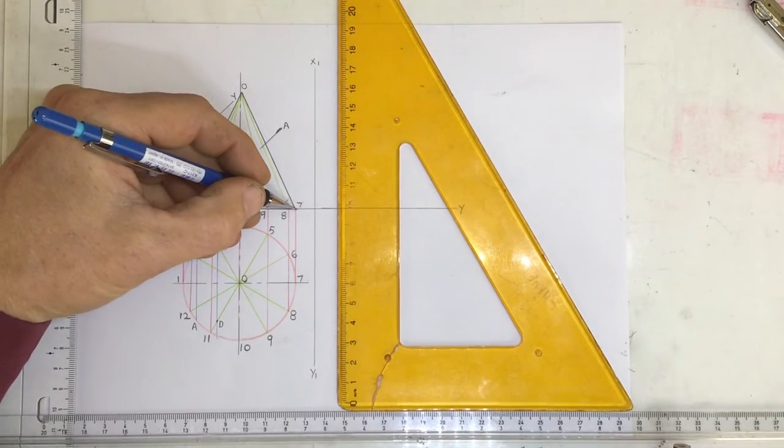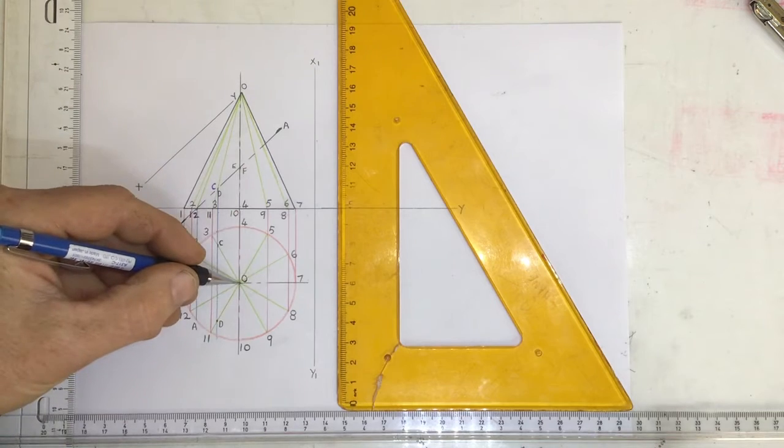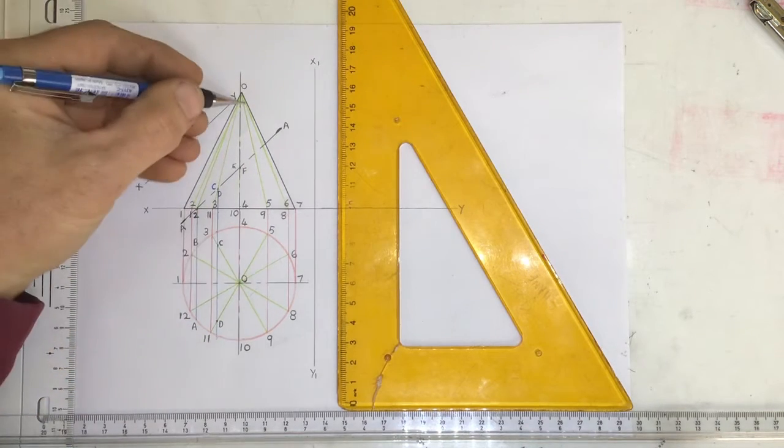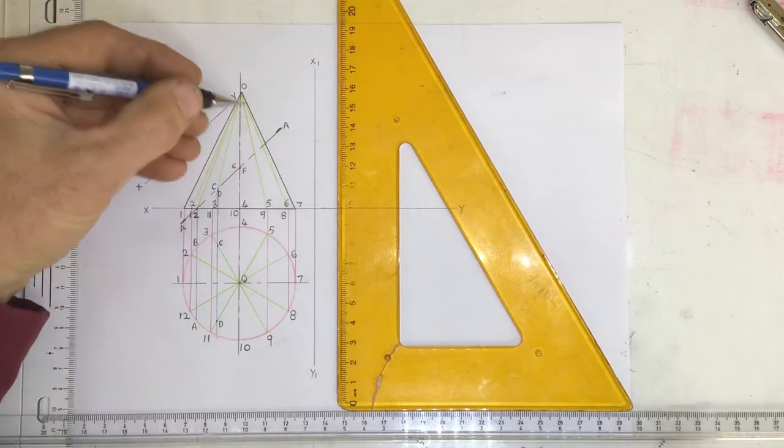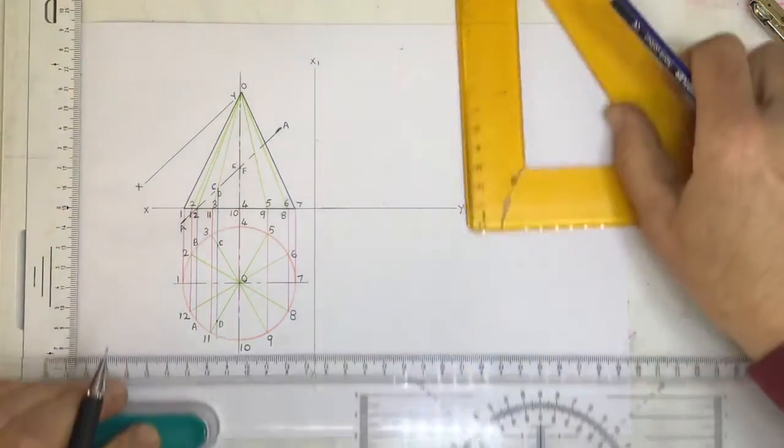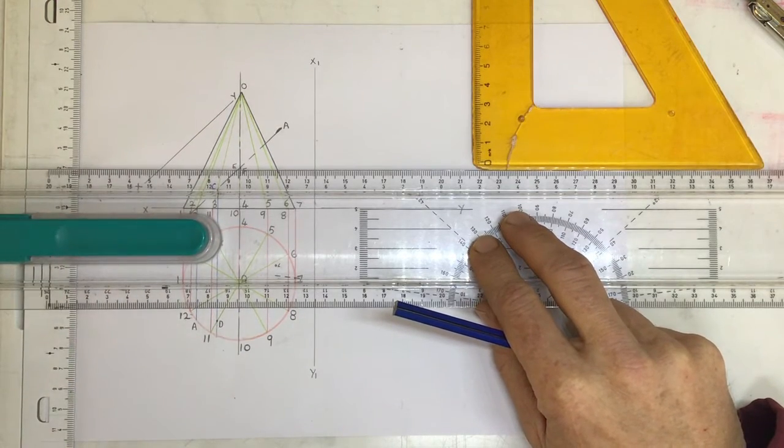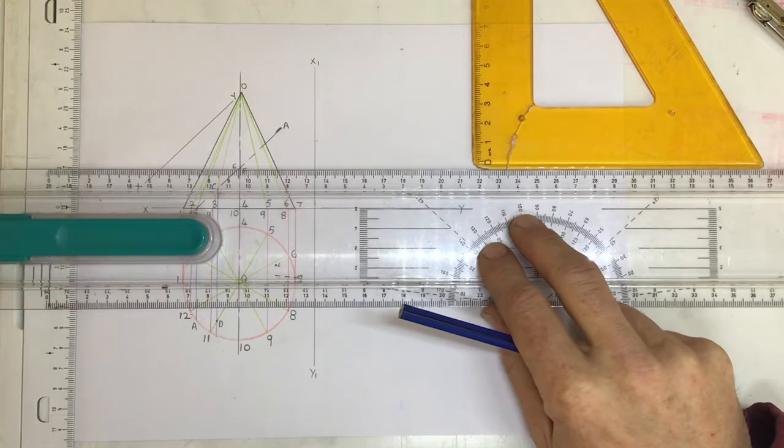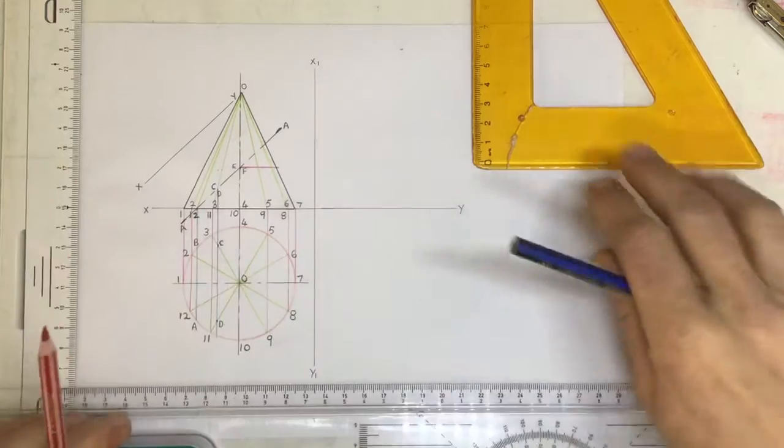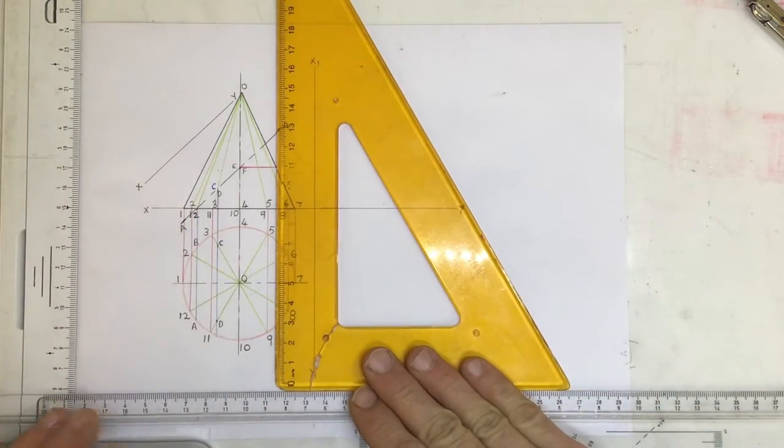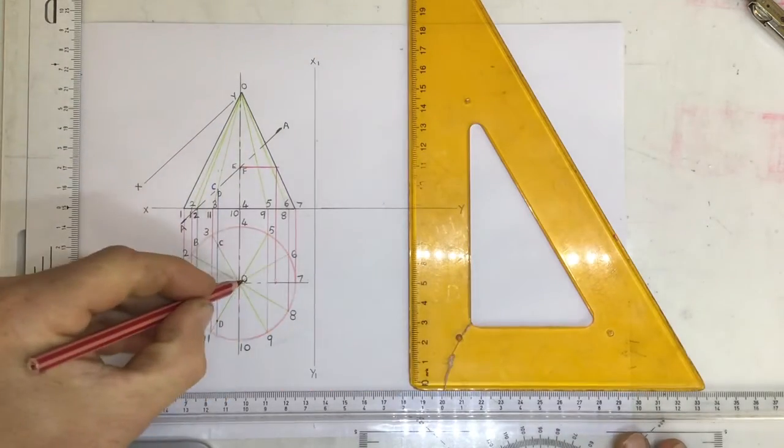Well, I know that this line over here, 7-0, is parallel to the XY axis in this view over here. Therefore I've got a true length of line 7-0. If I take a line coming across over here, I'm coming across over there and I drop that down until it touches 7-0.